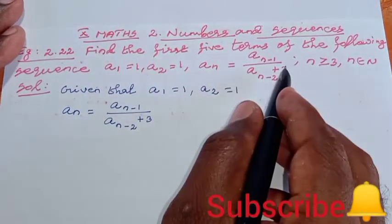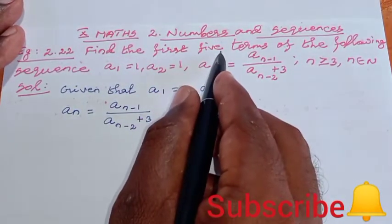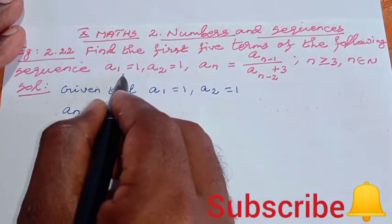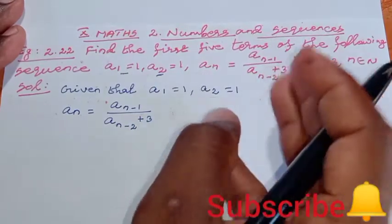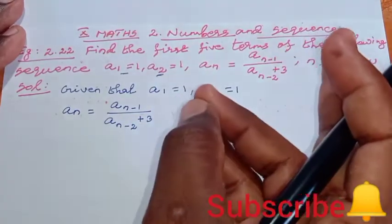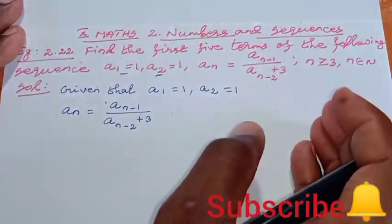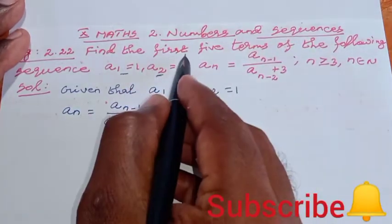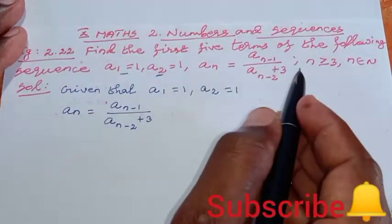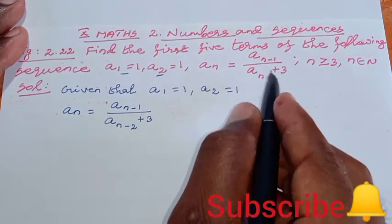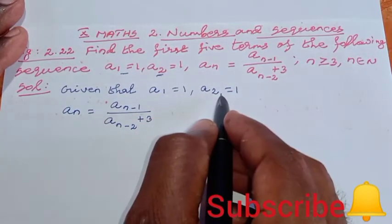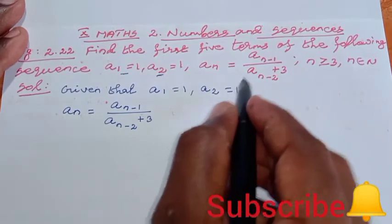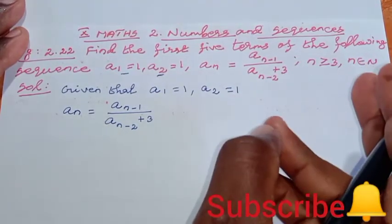Here we have a sequence and need to find the first 5 terms. Already the first 2 terms are given, a₁ and a₂. So we need to find the third term, fourth term, and fifth term. First 2 terms are given: first term is 1, second term is 1.